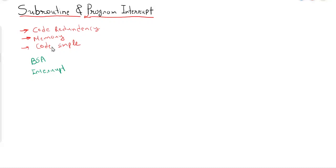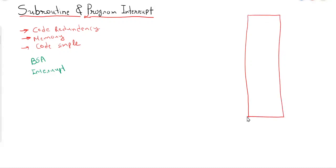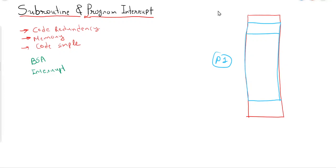In this topic we will discuss how the CPU implements the subroutine call mechanism. Let me draw a memory diagram so you can understand how it will be implemented. Assume this is memory and this area is given to a particular process — let's call it P1. On top there will be an instruction portion where all the instructions or programming statements are stored, and this will be managed by the program counter.